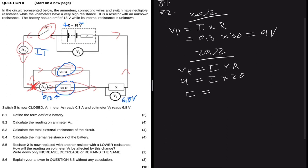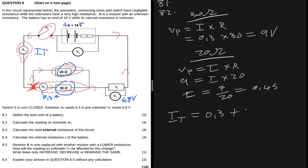The current through the 20 ohm resistor equals 9 divided by 20, which is 0.45 A. Therefore, I total equals 0.3 plus 0.45, which equals 0.75 amps.